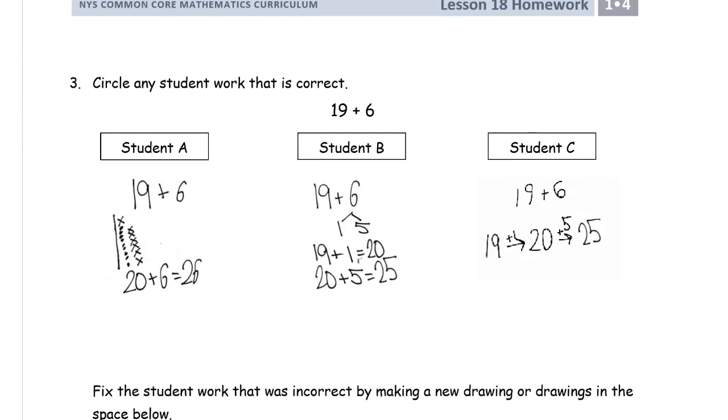Circle any student work that is correct. We're looking at 19 plus 6. We have three different ways here. Quick tens for student A, student B used number bonds, and student C has arrow way.